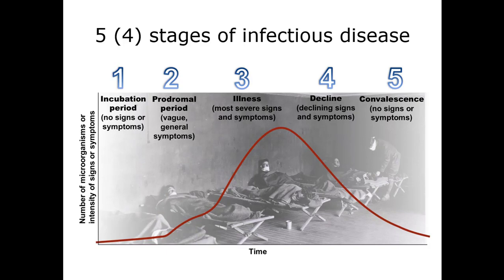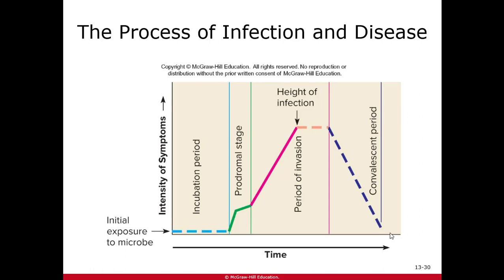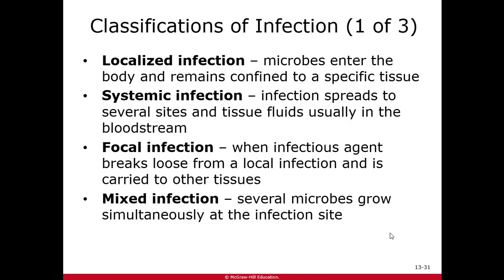We classify infections differently. A localized infection means the organism stays in one specific part of the body and doesn't go anywhere else — for example, an infection in a cut on your finger that stays there. That's considered a good infection since it stays in one spot.